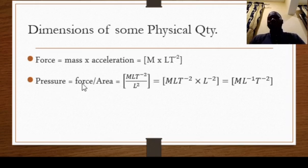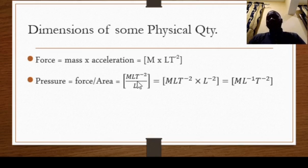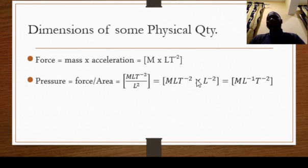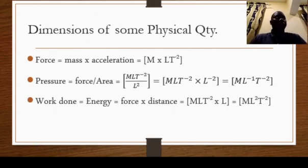For pressure, it is force over area. Dimension of force is [MLT⁻²] and area is [L²], so we have [MLT⁻²] over [L²]. Using indices, L¹ divided by L² gives L^(1−2) = L⁻¹. The final dimension of pressure is [ML⁻¹T⁻²].